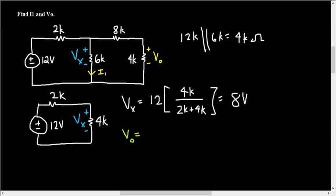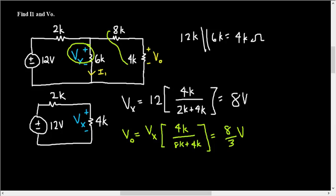Now we can actually solve for V0 by using Vx. V0 is going to be equal to Vx times 4K over 8K plus 4K, which will be 8 thirds volts. Notice how the 6 kilo ohms played no role in the equation for voltage division because this is the known voltage. Here are the series resistors. Using that, you can then use your voltage division equation.